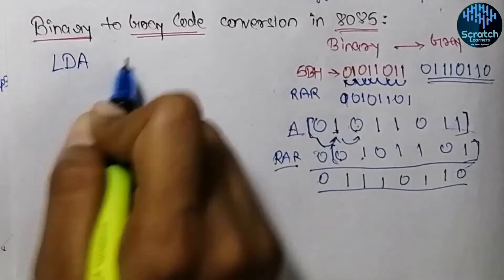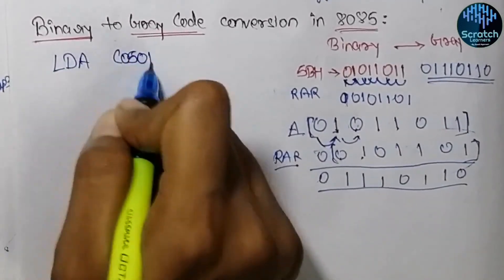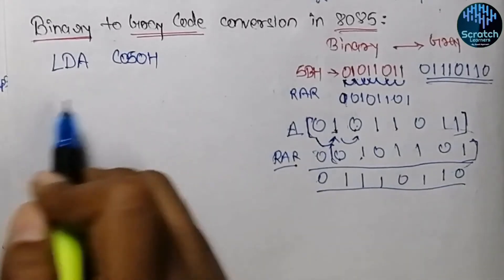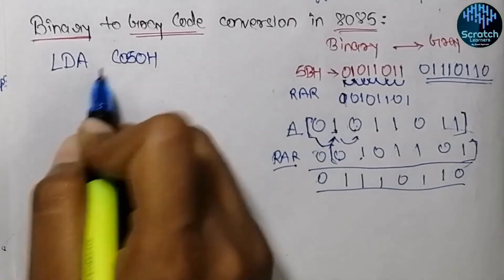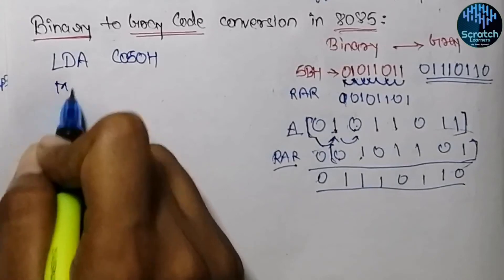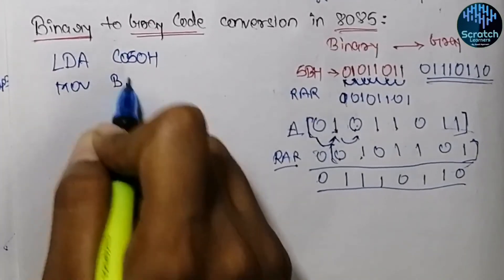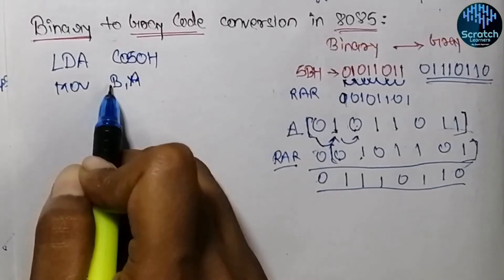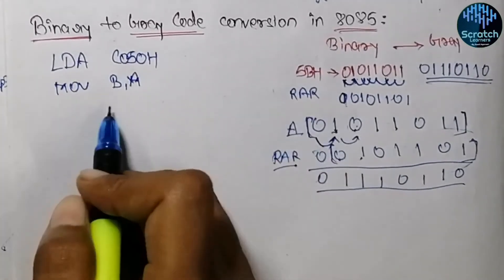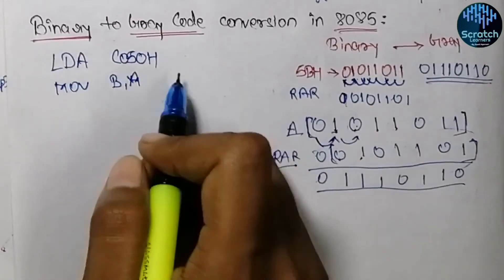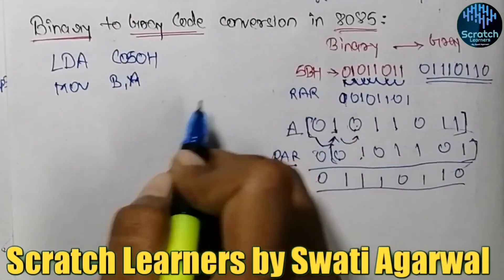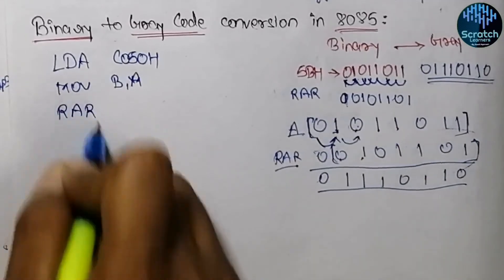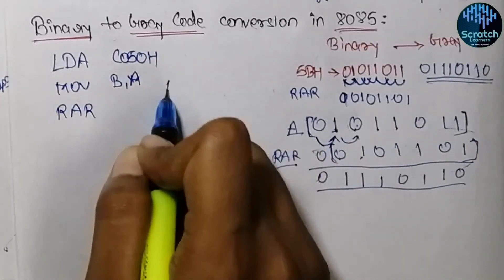So what are the steps: first we rotated the input towards right, then we performed the XOR operation between the actual data and the rotated data. For the assembly language program, first we will input the data from address C050 hex into the accumulator, then we will store this data into register B so that we can perform the XOR operation later.